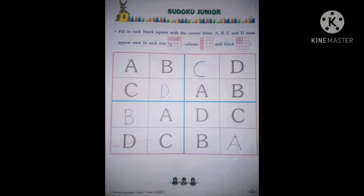Here write down B. A, B, A, D, C. B, A, D, C. Done.